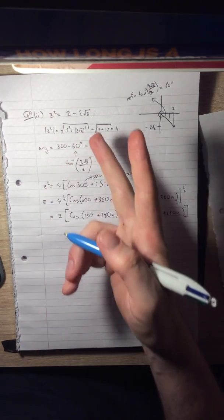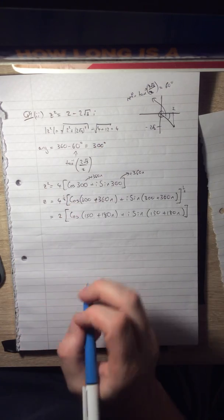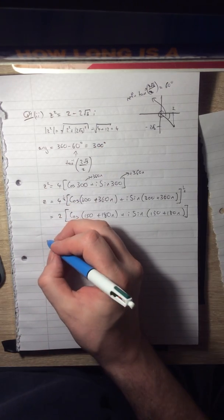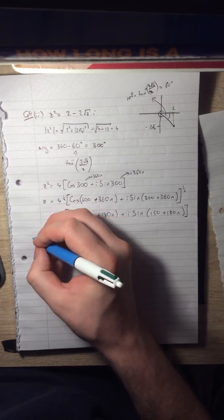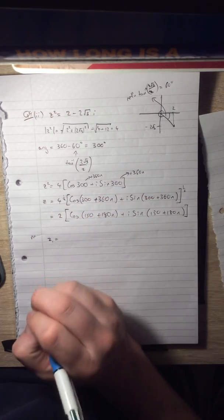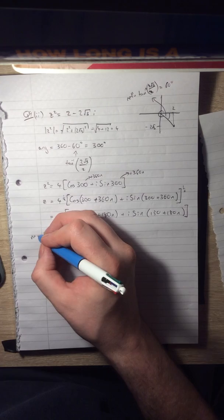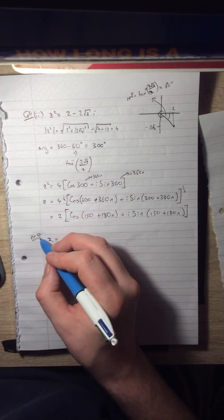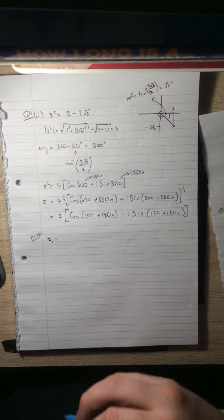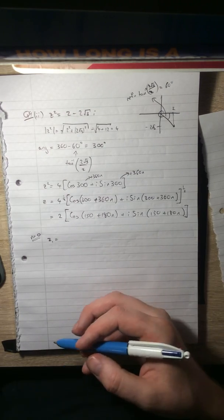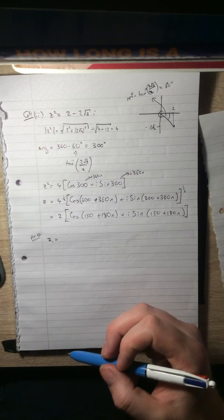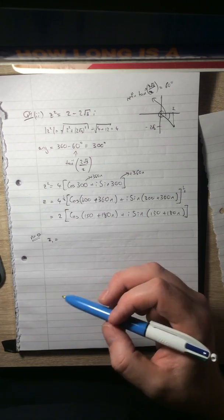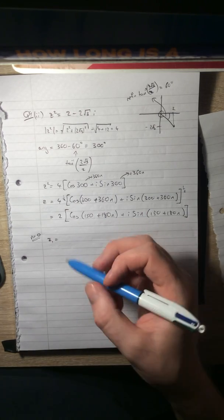Well, 4^(1/2) is 2, and then De Moivre's theorem says multiply by 1/2: cos(150 + 180n) + i sin(150 + 180n). And so we want two solutions here because it's a quadratic, z². So the first solution is when n equals 0. And you pick this number, by the way. If you want to start with n equals 17, start with it. What matters is the whole numbers are consecutive. It doesn't matter which one you pick.